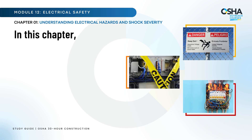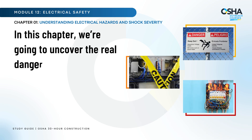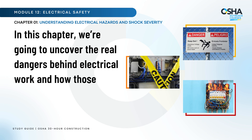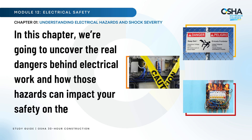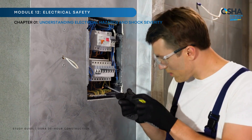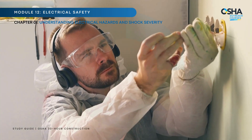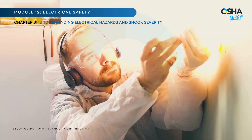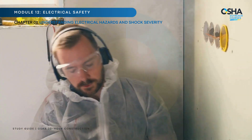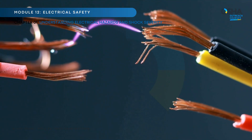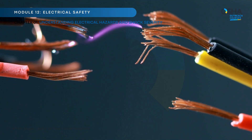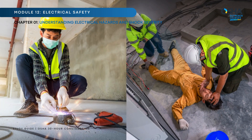In this chapter, we're going to uncover the real dangers behind electrical work and how those hazards can impact your safety on the job. Electrical injuries can happen in the blink of an eye, and they are often fatal. There are two main types of electrical injuries you need to be aware of: direct and indirect.